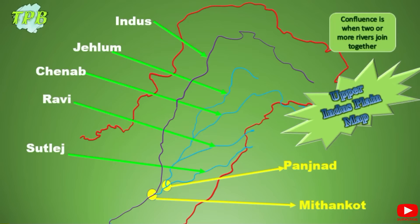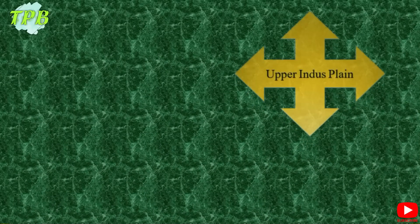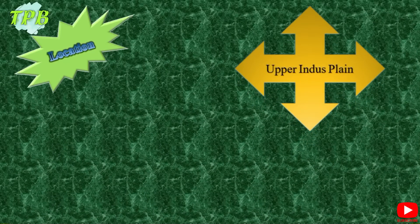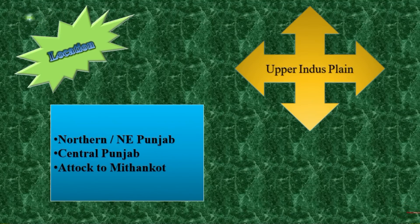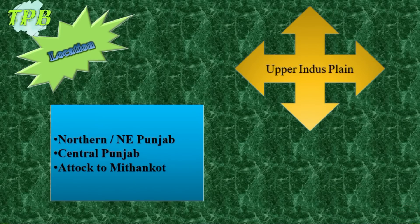Let us have a look at the coordinates of the Upper Indus Plain. It comprises northern and northeastern Punjab, includes central Punjab, and the areas from Attock to Mithankot are part of the Upper Indus Plain.